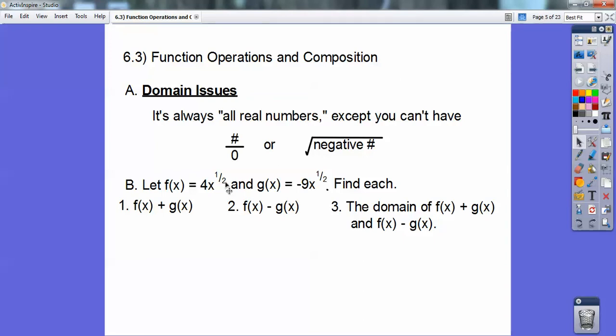f of x plus g of x, you just add them together. And since these have the same exponents, x to the 1 half, then we just have to add 4 plus negative 9. 4 plus negative 9 is negative 5. So it's negative 5x to the 1 half.